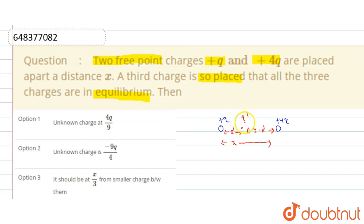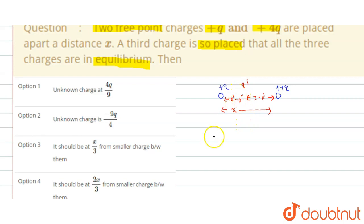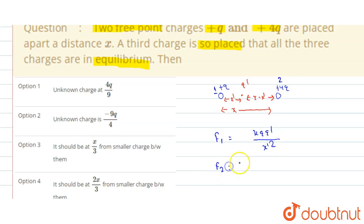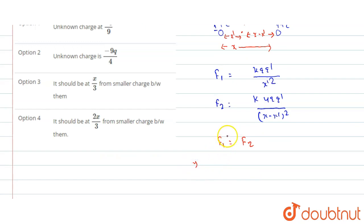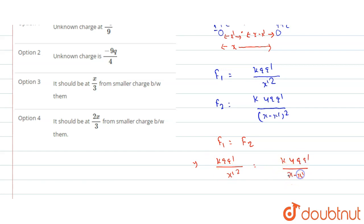Since all three charges are in equilibrium, the net force on q' must be zero. So F1 equals F2 and they must be opposite to each other. F1 is the force due to +q: F1 = k·q·q' / x'². F2 is the force due to +4q: F2 = k·4q·q' / (x − x')². Setting F1 equal to F2, we get k·q·q' / x'² = k·4q·q' / (x − x')².